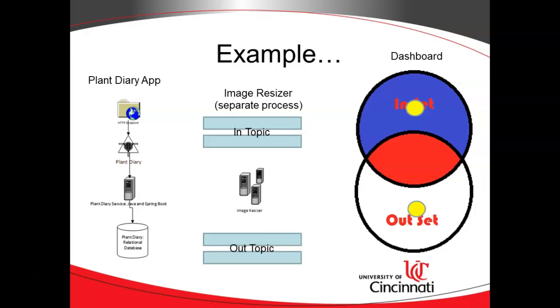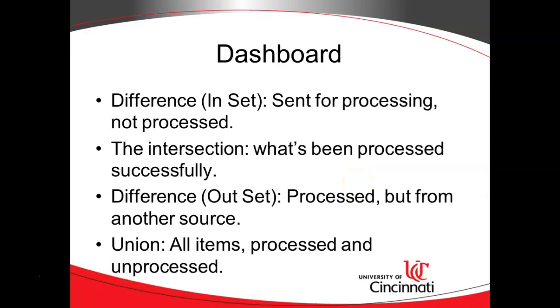You notice we have the exact same object in the in set as we have in the out set. So these objects should not be in the difference area, but they should be married up together in the intersection instead. Therefore we can tell that items that are in that intersection have been processed because they've been seen by the in set and they've been seen by the out set. Difference has been sent for processing. Difference looking at the in set side means it's been sent for processing but not processed. Intersection means it's been processed successfully.